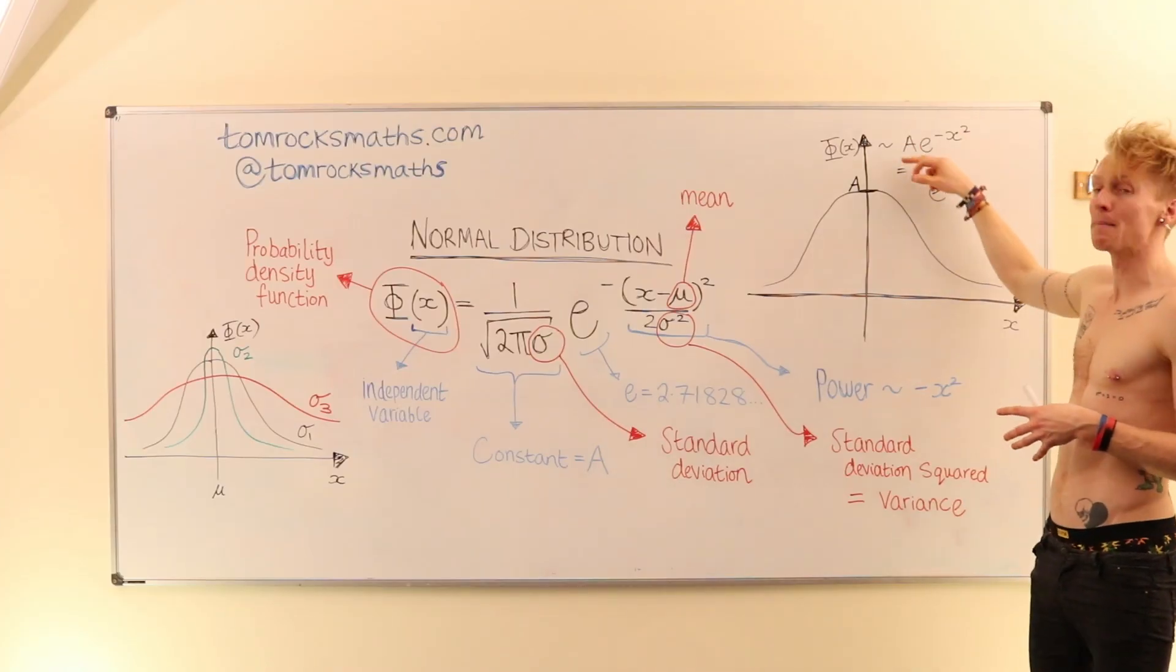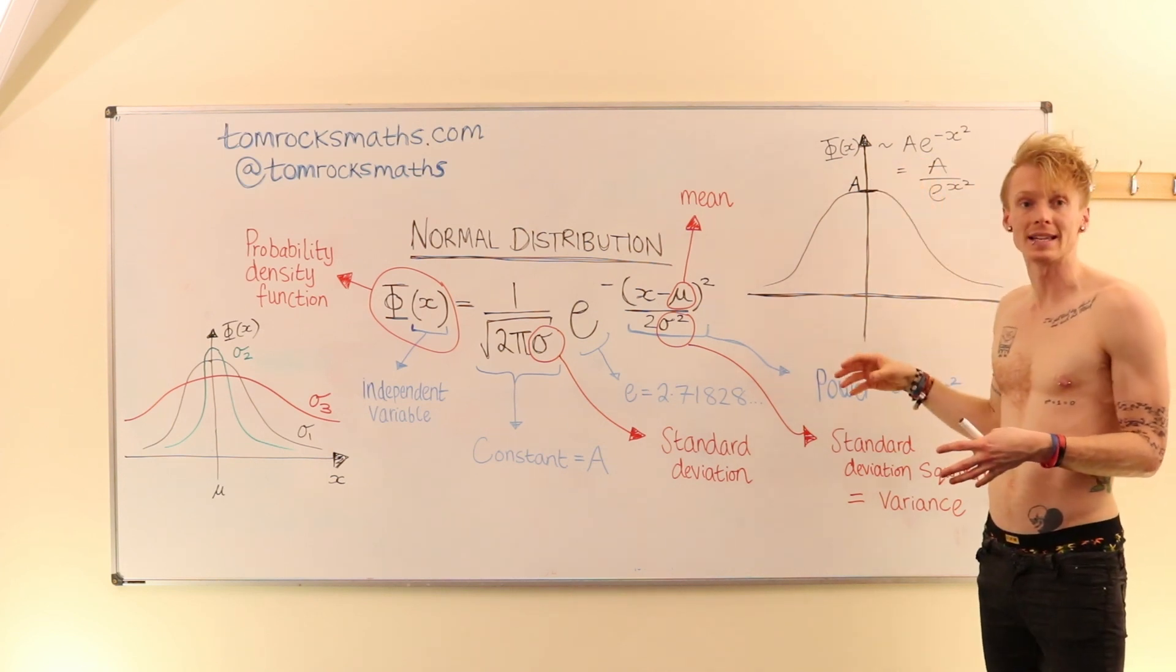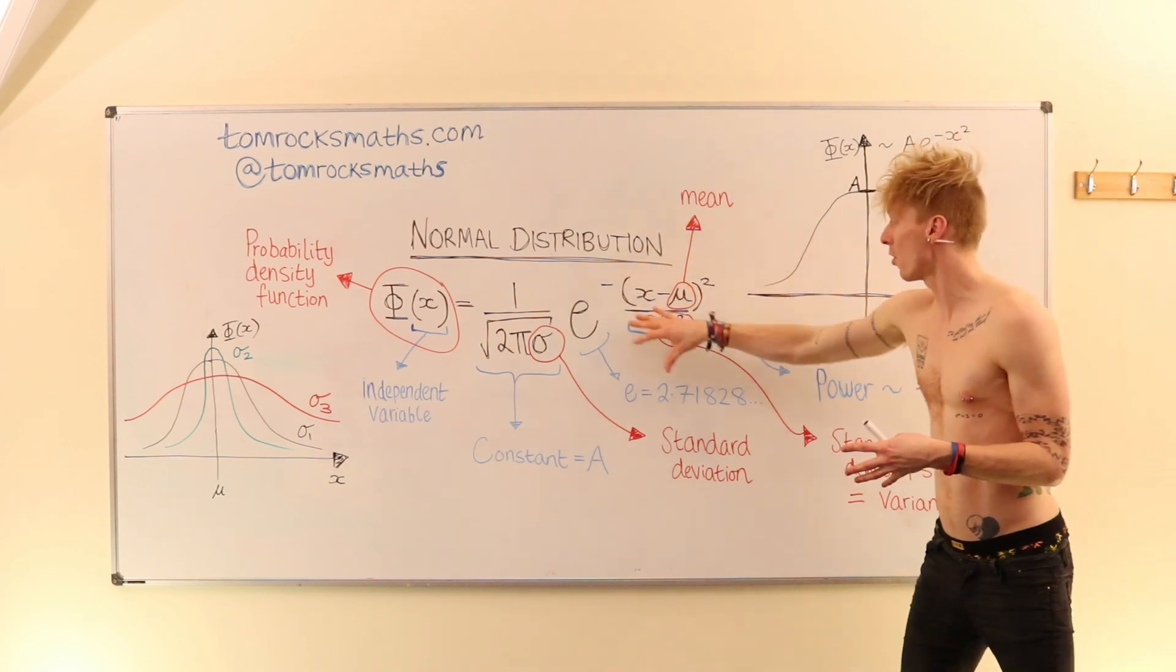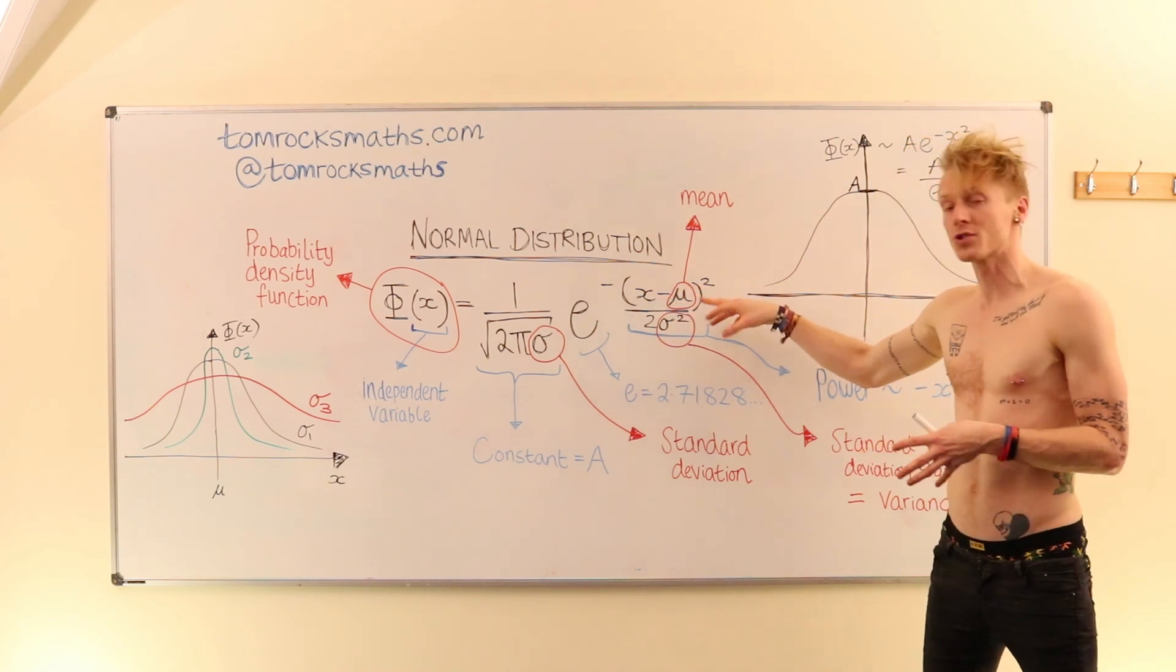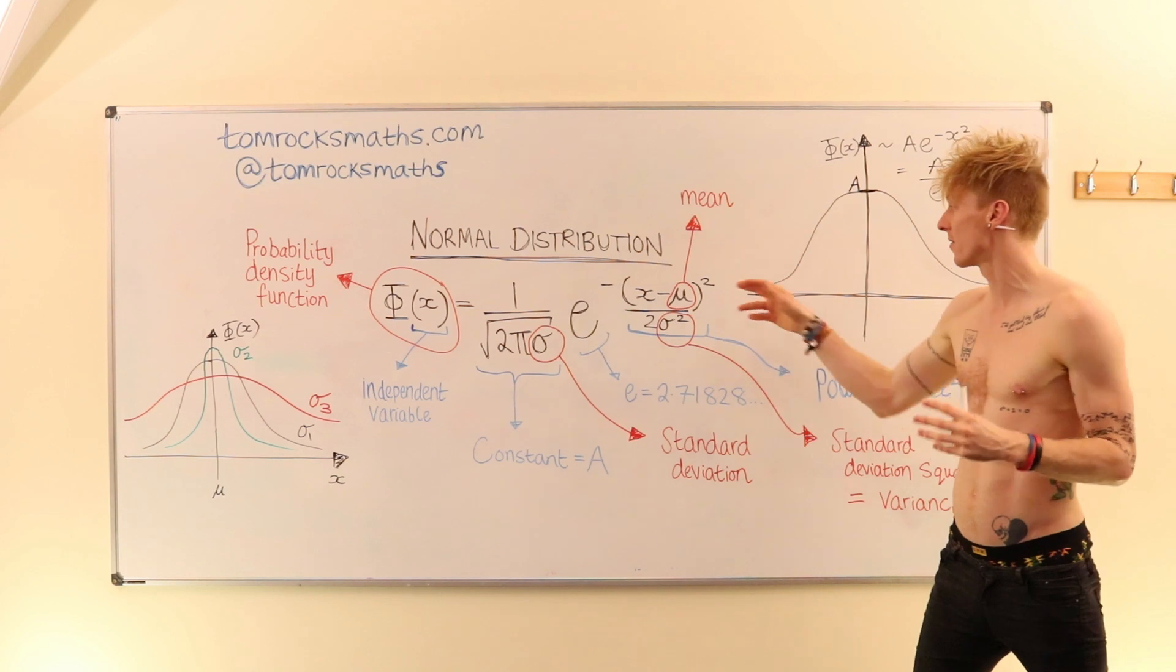based on our very simple form of the equation, we found that the peak was located when your power became 0. And so in the form of the normal distribution, we can see that when x equals mu, so when your data point hits that average, that mean value,